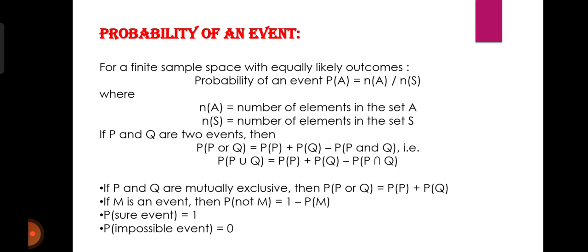अगर एक event M दे रखा है, तो probability of not M is equal to 1 minus probability of M। क्योंकि probability of M plus probability of not M is equal to 1 होता है। इसीलिए P(not M) = 1 − P(M)। अगर किसी sure event की बात करूँ तो उसकी probability होती है 1, और अगर impossible event की बात करूँ तो उसकी probability होती है 0।